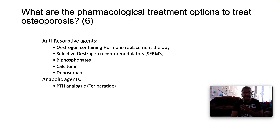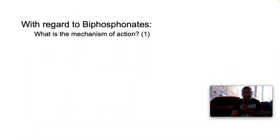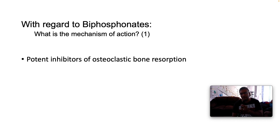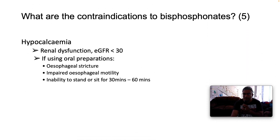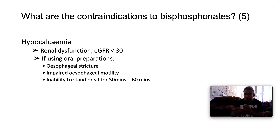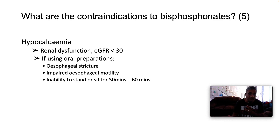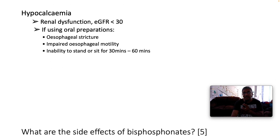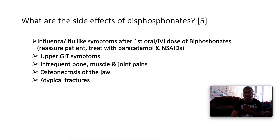With specific reference to bisphosphonates: their mechanism of action is that they are potent inhibitors of osteoclastic bone resorption. Contraindications include hypocalcemia — since bisphosphonates move calcium from the bloodstream back into bone, a patient who is already hypocalcemic must not receive them. Other contraindications are renal dysfunction with eGFR below 30, history of esophageal stricture, impaired esophageal dysmotility, and inability to stand or sit upright for 30 to 60 minutes after ingestion.